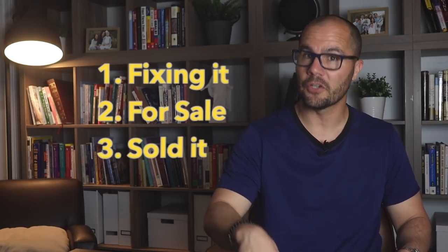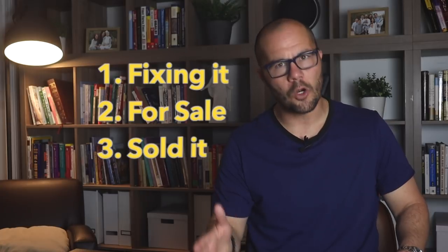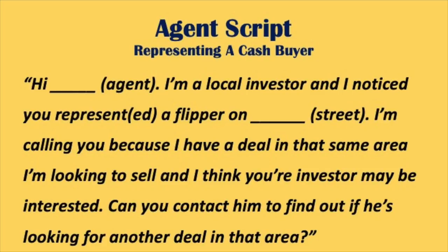To recap: a local active investor in the same neighborhood who bought a distressed property and is either currently fixing it up, actively selling it, or already sold and flipped it. If you're in a hurry, simply call the agent that represented the investor and ask them to tell their cash buyer about your deal — they'll be motivated because that's another property for them to sell and earn a commission. You'd say: 'Hi, I'm a local investor and I noticed you represented a flipper on 123 Main Street. I have a deal in that same area I'm looking to sell and I think your investor may be interested. Can you contact him to find out if he's looking for another deal in that area?' I did a video where I actually get on the phone and you can watch me look up, find, and call agents — link in the description. The process of finding these active investors and contacting the agents should only take a few days, so let's do that on days three through five. I've never not found a buyer doing this, as long as you actually have a deal.